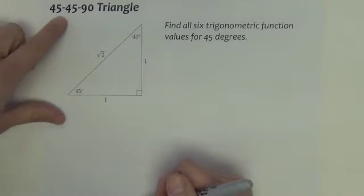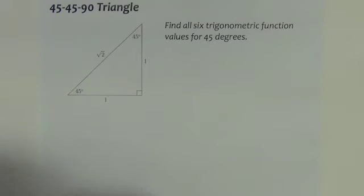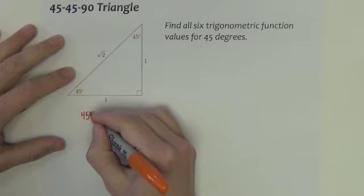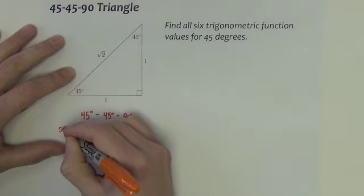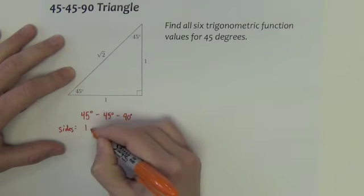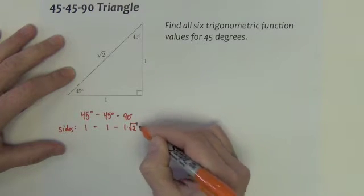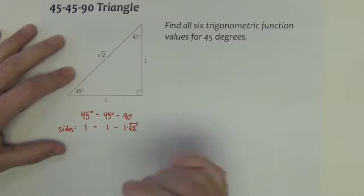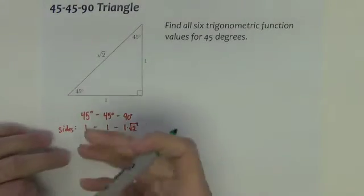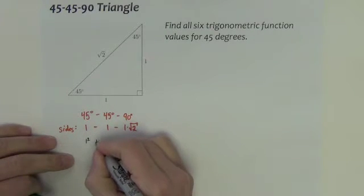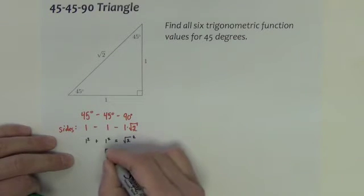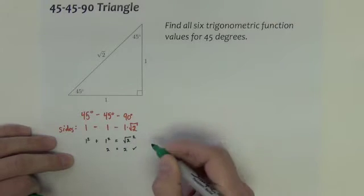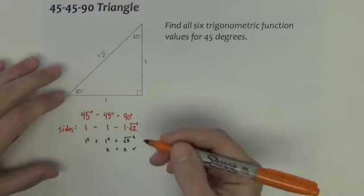The first of our two special triangles is the 45-45-90 right triangle, and in a 45-45-90 right triangle, the sides are in the ratio 1, 1, 1 times square root of 2. In other words, Pythagorean's Theorem would tell you that 1 squared plus 1 squared equals what would end up being just square root of 2 squared. Of course, this side becomes 2, this side becomes 2, so sure enough, those three sides check out. They work in Pythagorean's Theorem.